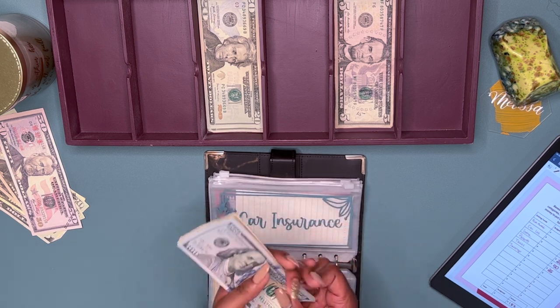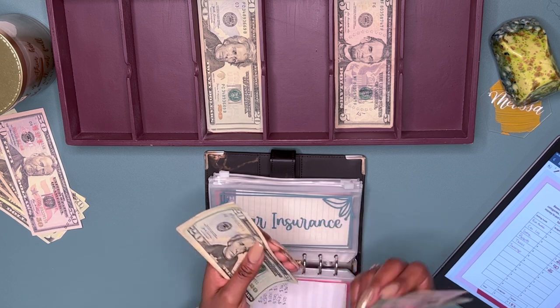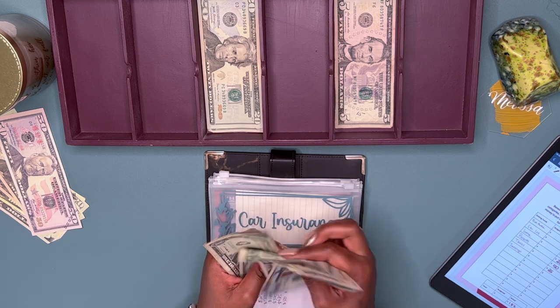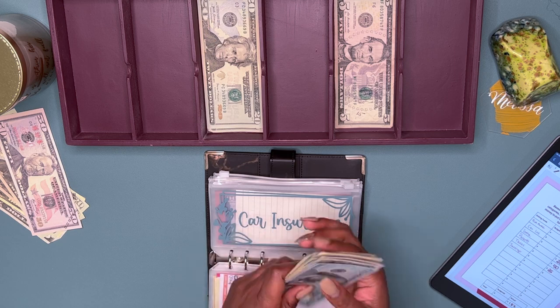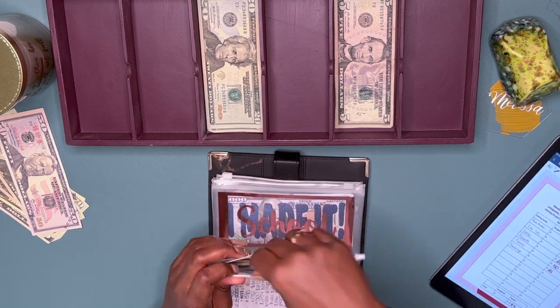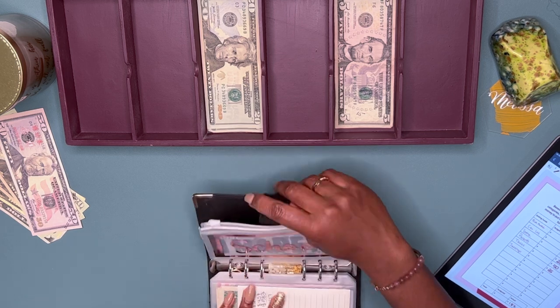Okay, so now I have $600, $650, $700, $764. So I have $764 for car insurance. And that's it for this binder.